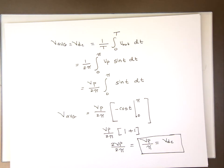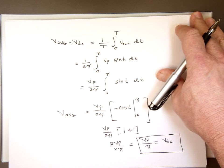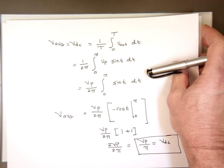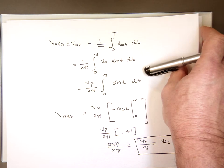One thing to be aware of, this is the peak value. In some cases, sometimes you look at a problem, they give you the RMS value. RMS, root, mean, square.